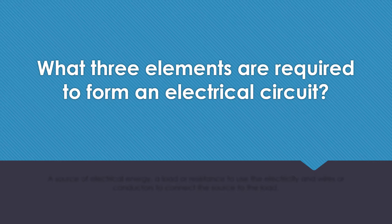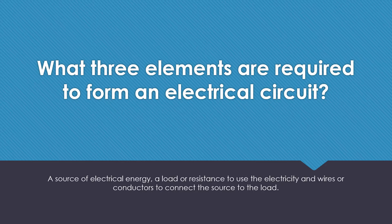What three elements are required to form an electrical circuit? A source of electrical energy, a load or resistance to use the electricity, and wires or conductors to connect the source to the load.